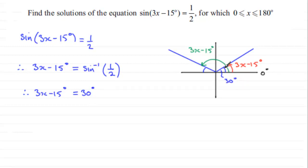And because I've marked that angle as being the same as this one here, this little angle in here also is 30°. So that corresponds with the red 3x - 15°. So that's that first solution.